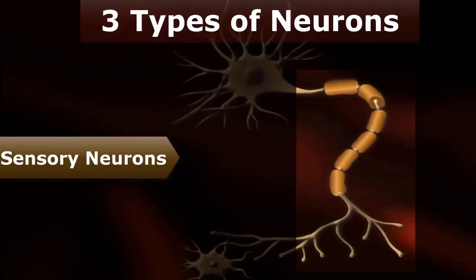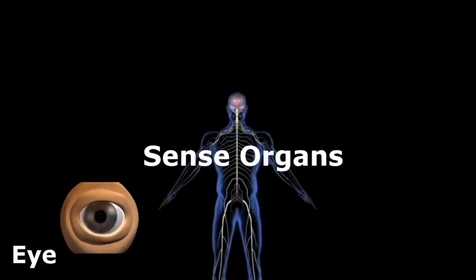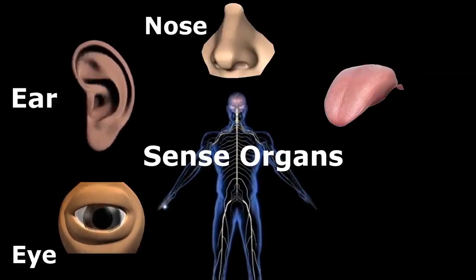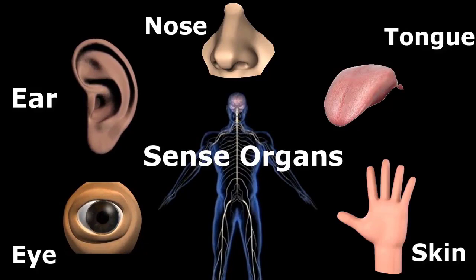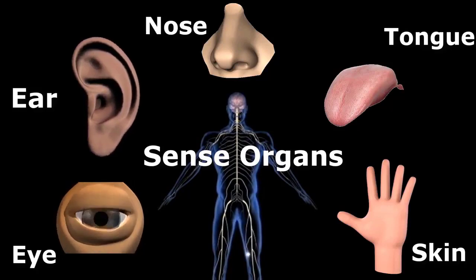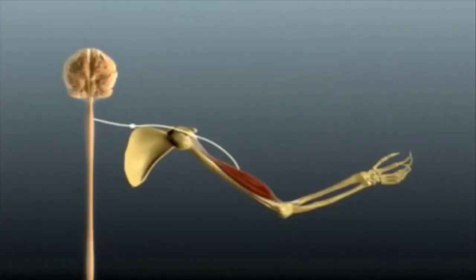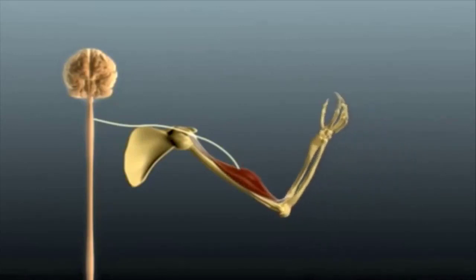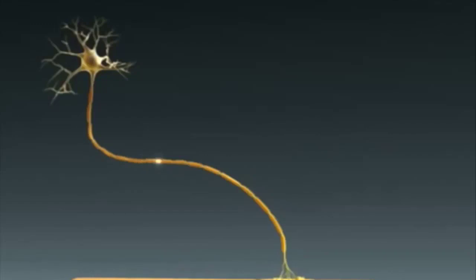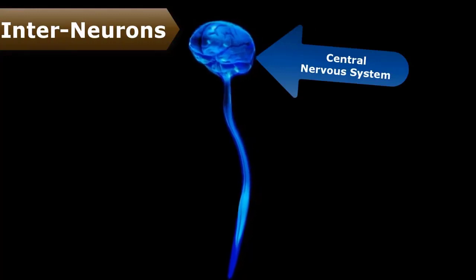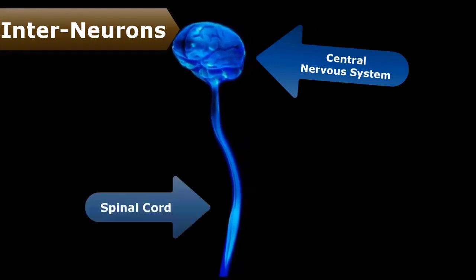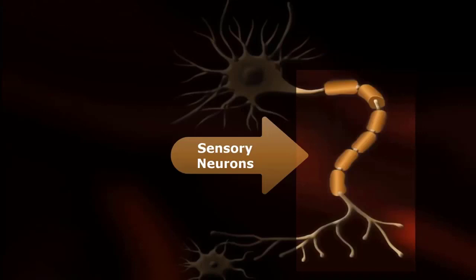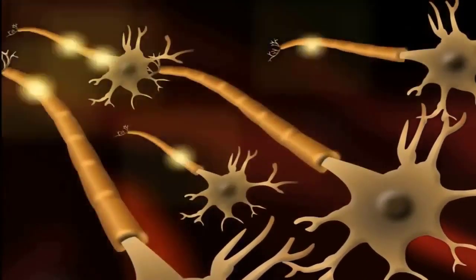Sensory neurons, sensory organs — مثلاً آنکھ، کان، ناک، زبان اور جلد وغیرہ — سے nerve impulses کو central nervous system تک منتقل کرتی ہیں۔ Central nervous system سے effectors یعنی muscles اور glands تک ہدایات پہنچائی جاتی ہیں۔ Inter neurons، central nervous system یعنی دماغ اور spinal cord میں موجود ہوتی ہیں اور sensory neurons اور motor neurons کے درمیان رابطے کا کام کرتی ہیں۔